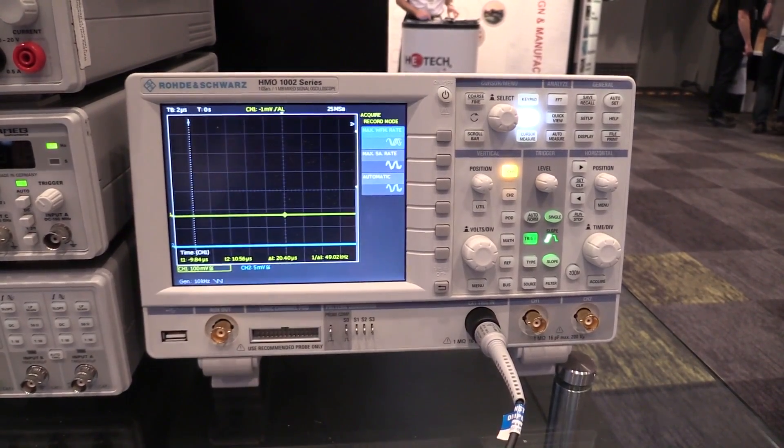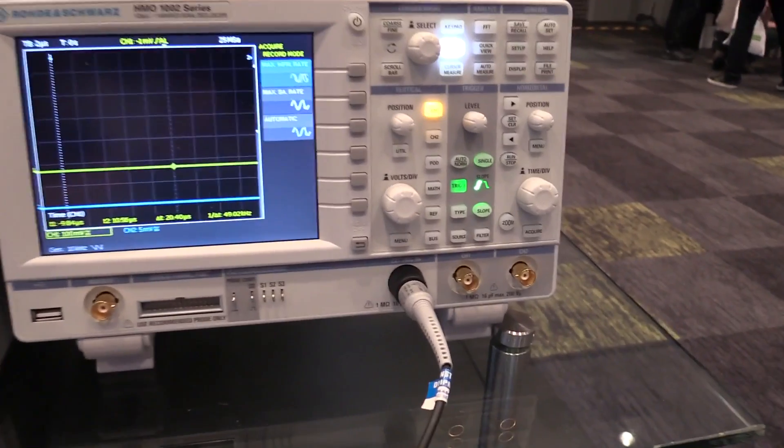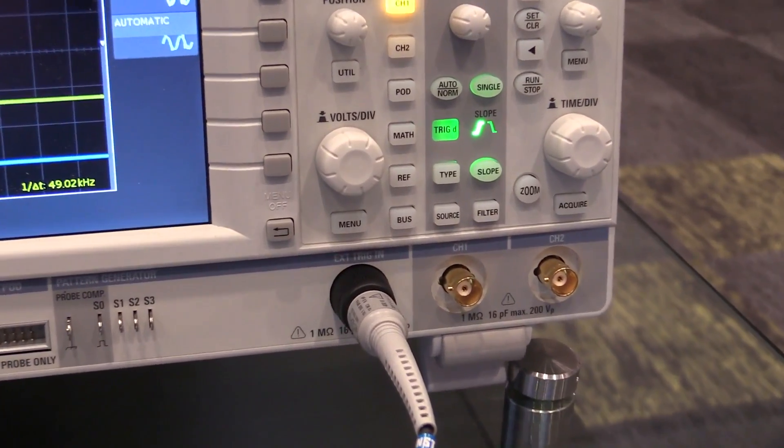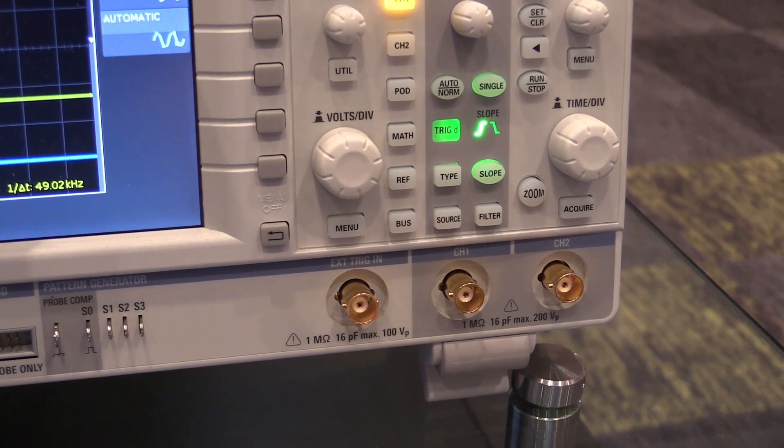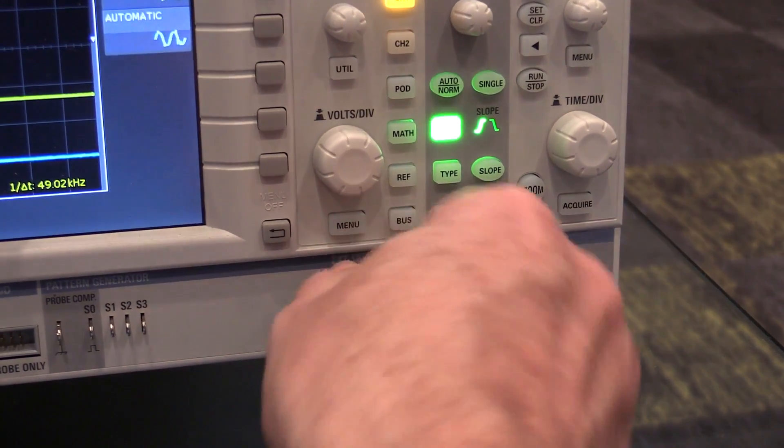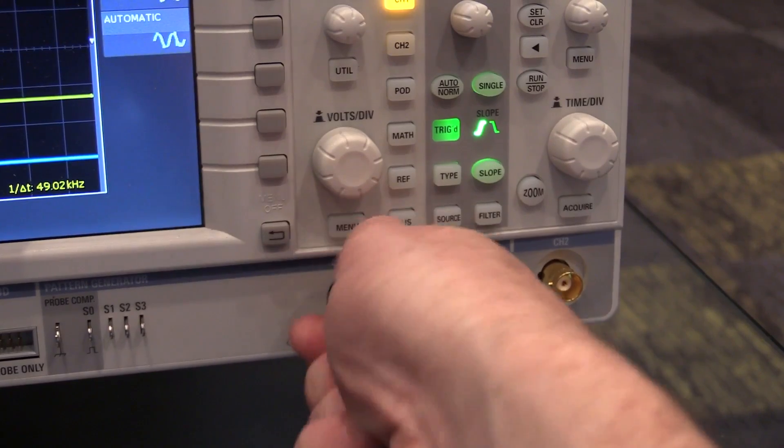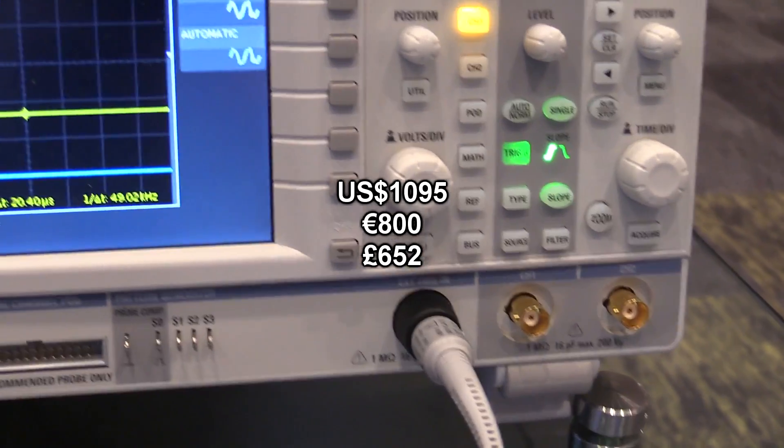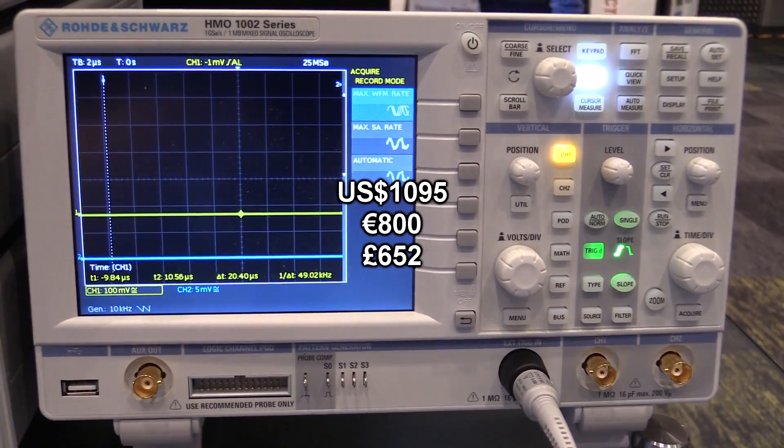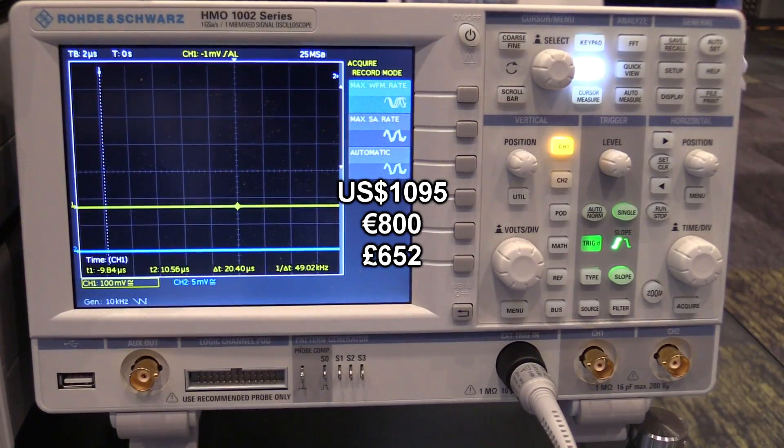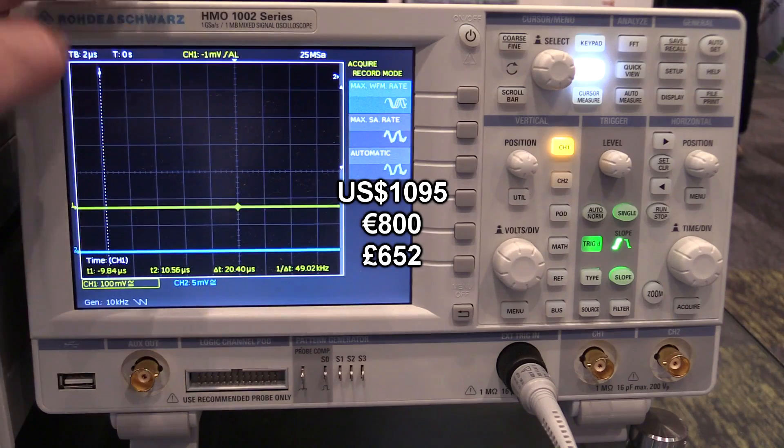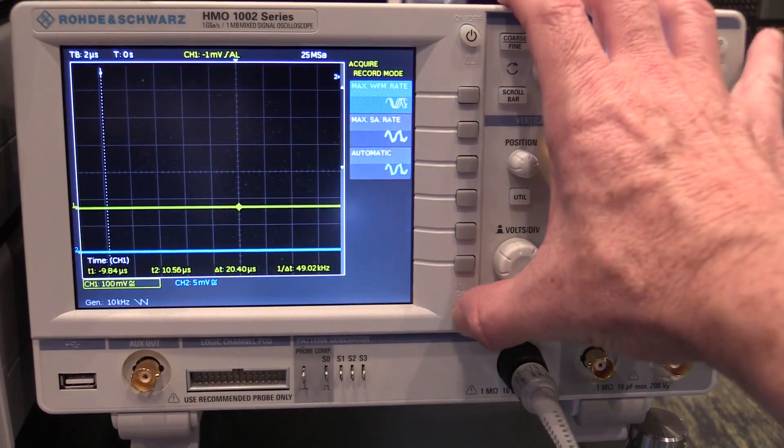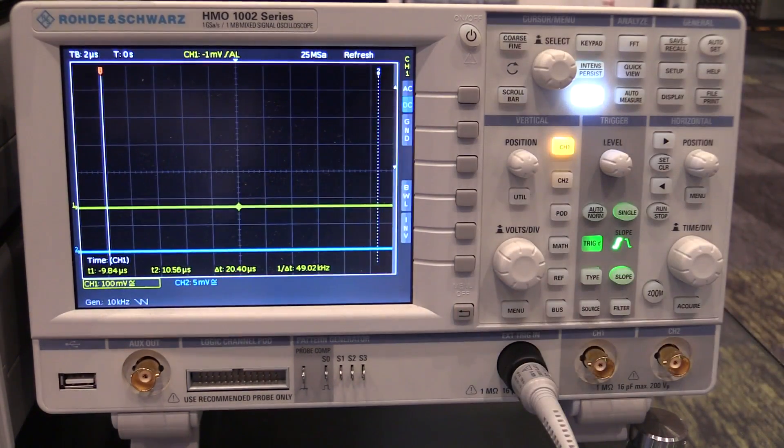And it's pretty sexy looking. Check out this gold plated BNC connectors. Very nice touch. Very nice indeed. Not exactly sure how much this thing costs. I think it's like a thousand Australian dollars. It's not cheap. You're going to be paying like probably double a Rigol equivalent type series. But it is really a sweet little unit.